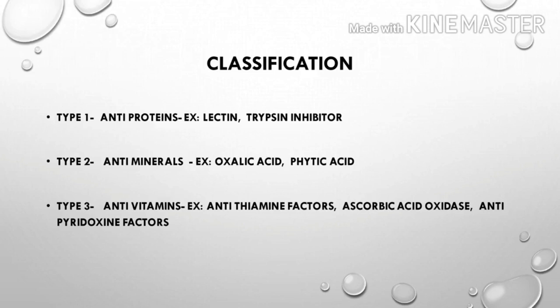The third category is anti-vitamins. These interfere with particular vitamins. For example, anti-thiamin factors and ascorbic acid oxidase. All this information is important to answer questions about anti-nutritional factors.